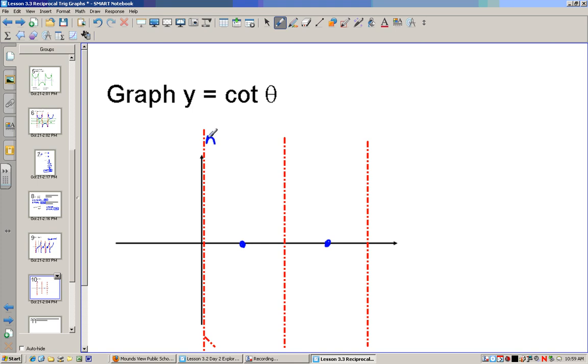Now cotangent starts at the top, so it's going in kind of the opposite direction that tangent is. So it keeps doing this to the right and to the left, and again this one has a period of 180 degrees also.